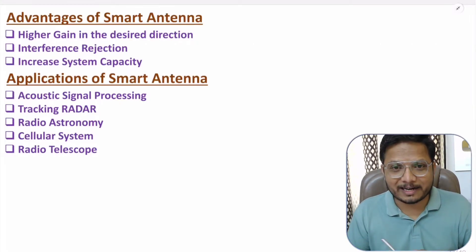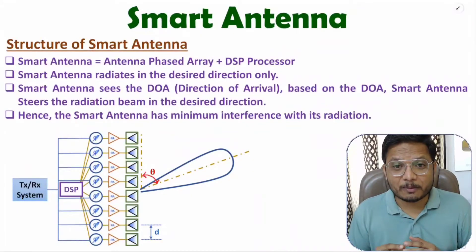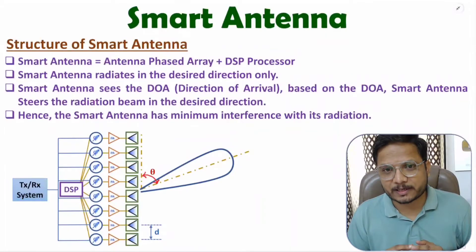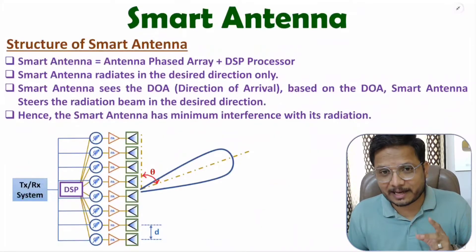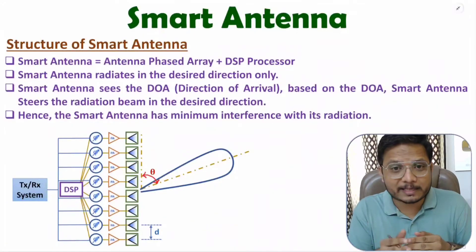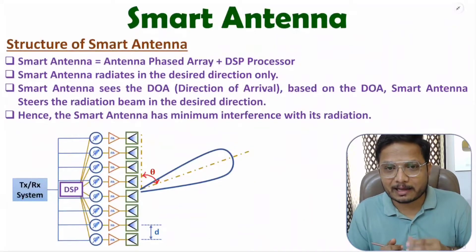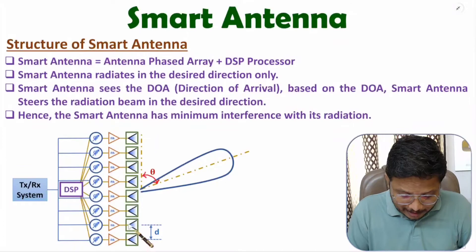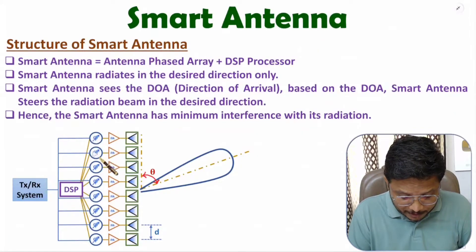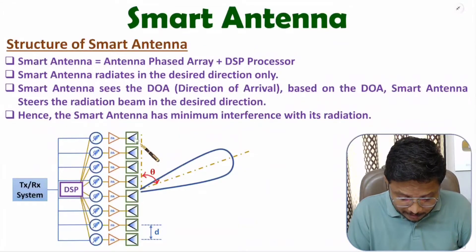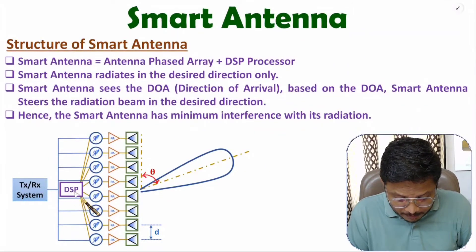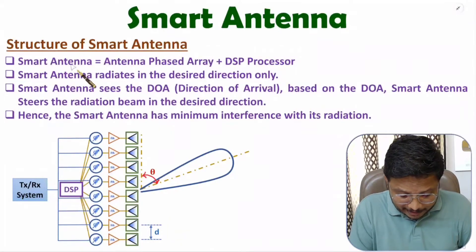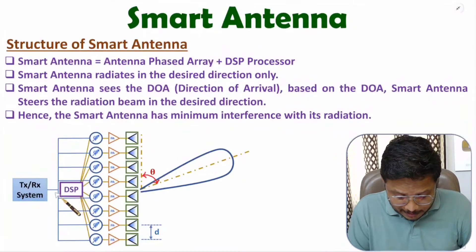Let us begin with the first agenda — structure of smart antenna. Smart antenna structure is a combination of a phased antenna array with a DSP processor. In my last video I explained phased antenna array. If you combine a phased antenna array with a DSP processor then we can have a smart antenna. We have multiple antenna elements connected with a power amplifier and also connected with a phase shifter, where the value of phase shift is defined by the DSP processor.